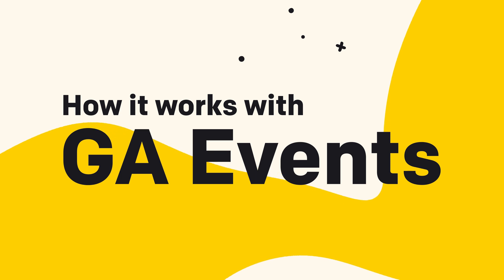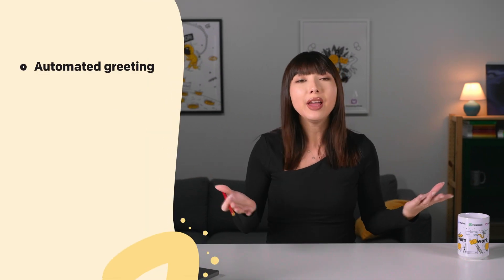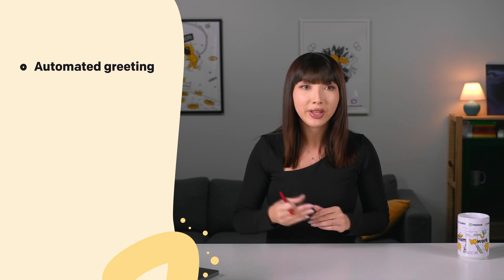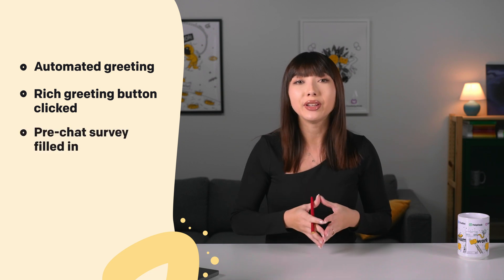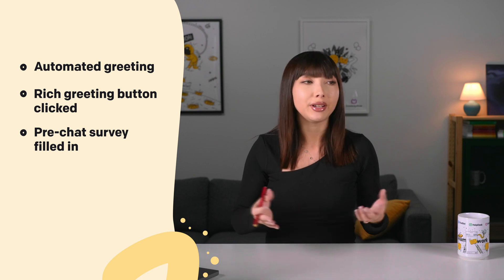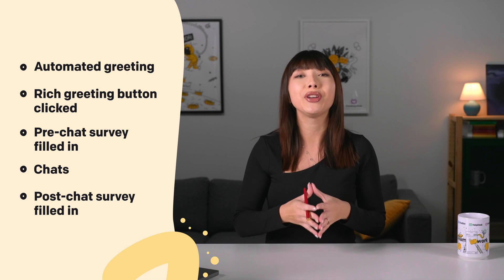Before we get into the setup, let me explain how the integration works with GA events. The LiveChat and Google Analytics integration is based on GA events. When a visitor performs an action related to an interaction with LiveChat, the data is pushed to your Google Analytics account via the Analytics JavaScript. Events are passed with category, action, and label attributes. The integration can collect information like: automated greeting — every time a visitor is sent a greeting; rich greeting button clicked — when a visitor clicks a rich greeting button; pre-chat survey filled in — when the pre-chat form is submitted; chats — when the chat starts; and post-chat survey filled in. The integration doesn't collect any personal data of the visitor.